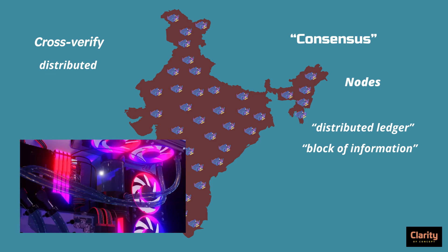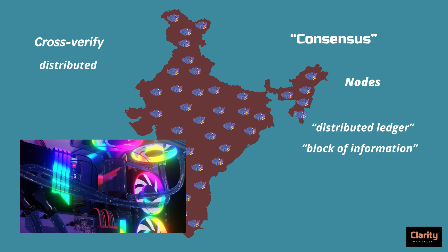When a new transaction has to be approved and a new block added to the blockchain ledger, the party has to pay a transaction fee, usually in the form of cryptocurrencies such as Bitcoin or Ethereum. This money goes to the person who helped add the new block by solving the mathematical puzzles. Solving these puzzles strengthens the blockchain system and makes it more secure. That is why money is paid as a reward for solving these puzzles and helping add a new block.